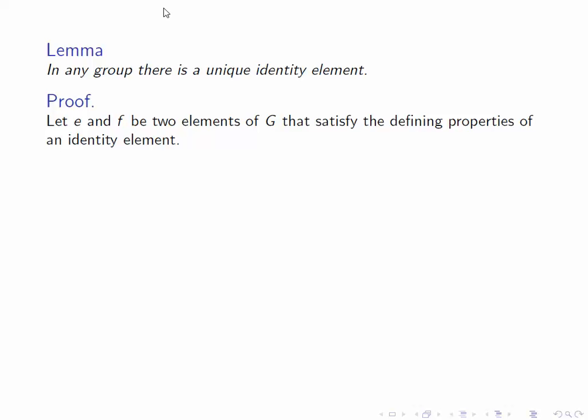So to prove this, let's pick two elements in the group and suppose that they satisfy the defining properties of an identity element, and then we'll show that they have to be equal. So let's let E and F be two identity elements. In other words, for all G in G, EG equals G and GE equals G, and similarly for F.